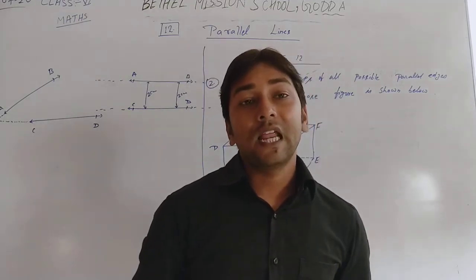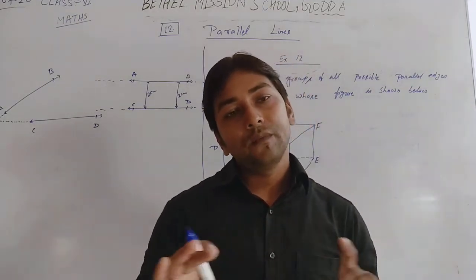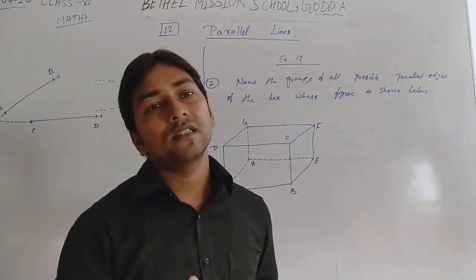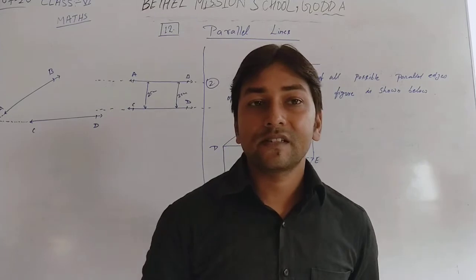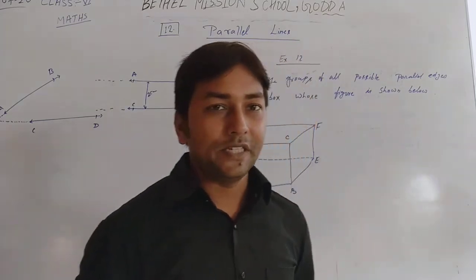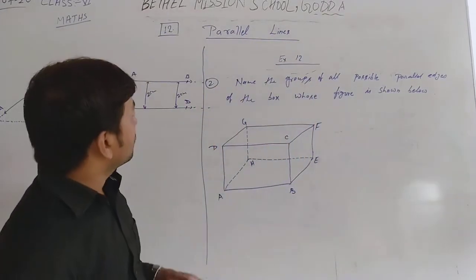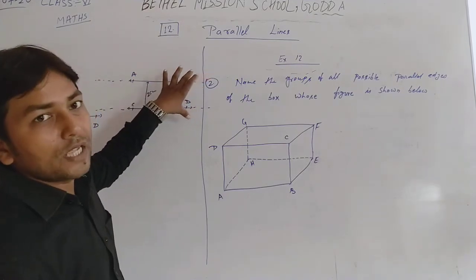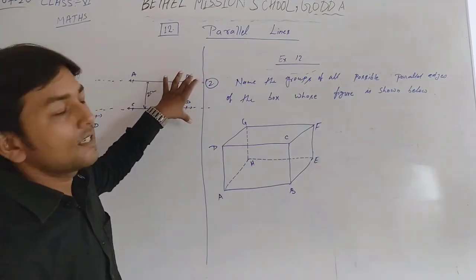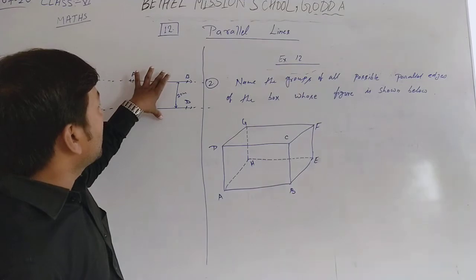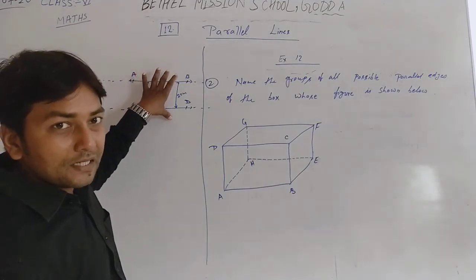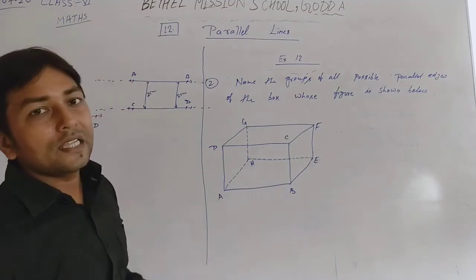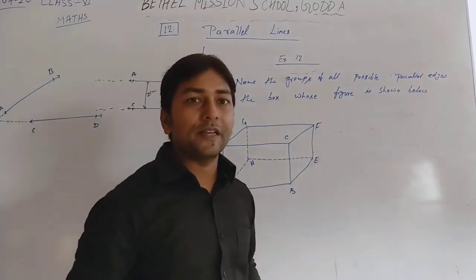For example, you know the railway track. The two rails of the railway track are always situated at the same distance. So two lines, line segments, or rays are called parallel if the distance between both is equal or the same.